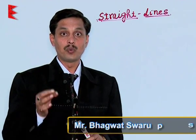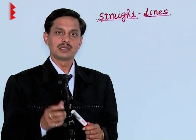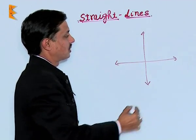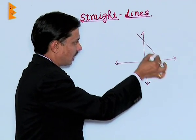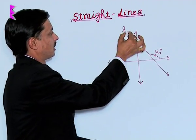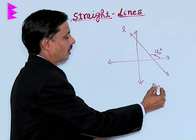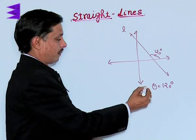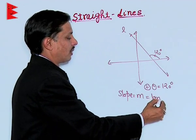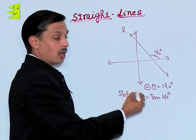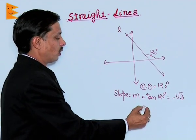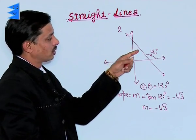Now I want to explain how to find the slope of a line in different situations. In the Cartesian coordinate system, if a line makes an angle of 120 degrees with the positive direction of the X-axis, then theta is 120 degrees, which is positive. So the slope M = tan(120°) = −√3. Hence, the slope of this line is −√3.